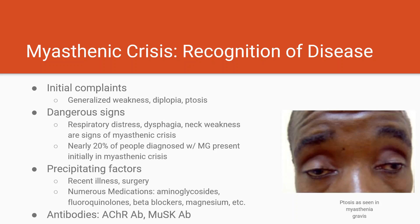When interviewing a patient you believe is in myasthenic crisis, it's important to determine precipitating factors. As with many chronic diseases, a flare can be caused by anything that puts excessive stress on the body — a big recent illness, surgery, things like that. Beyond this, it's important to know there are a number of medications implicated in myasthenic exacerbation. Key ones include antibiotics like aminoglycosides and fluoroquinolones, beta blockers, and even the electrolyte magnesium — so we want to keep these patients' mag on the lower side. Quick recognition and discontinuation of the offending medicine is really important.